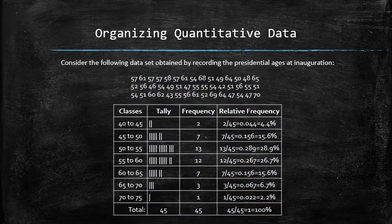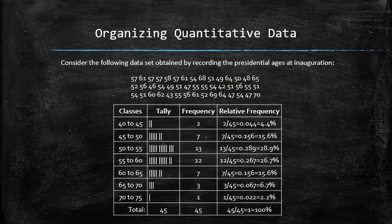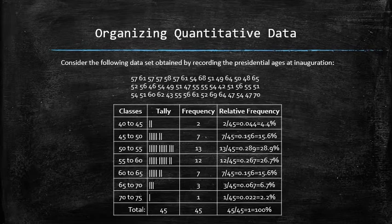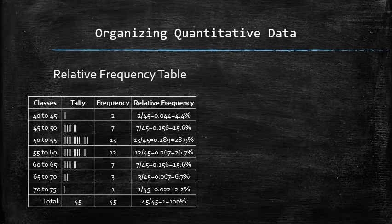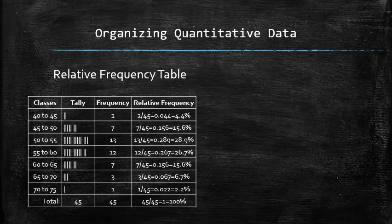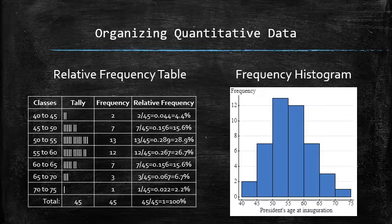Basically, once the classes are created, we can construct a relative frequency distribution table for large discrete data in exactly the same way we did it earlier for small discrete data. And once we have a complete frequency table, we can now construct a frequency histogram.